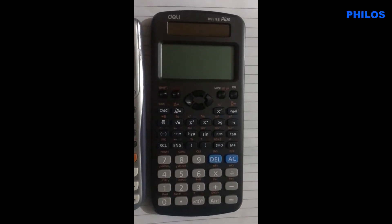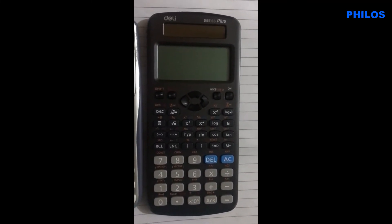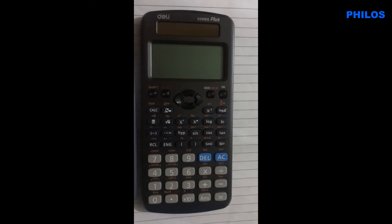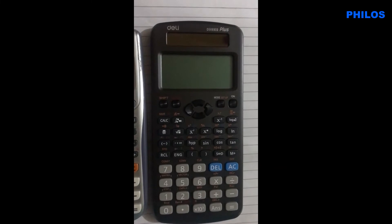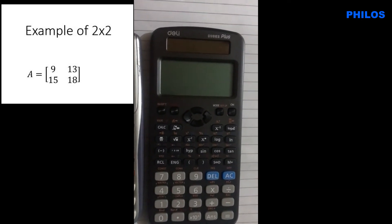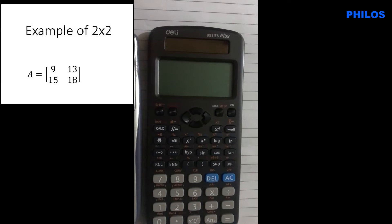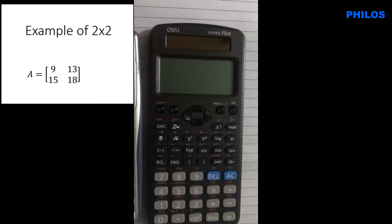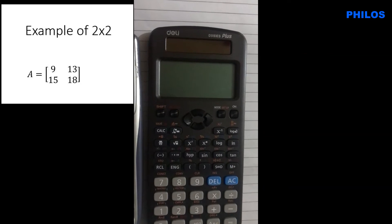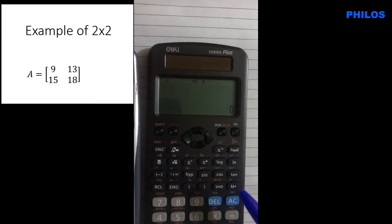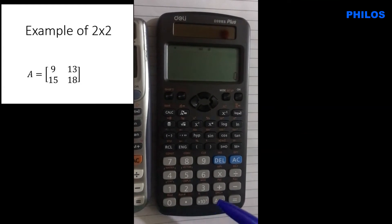Before taking another 3x3 example, let's do a 2x2 matrix. I'm showing you this so that in exams you can compare your calculator result with what you've solved to know if you're on the right path, and for MCQs you can solve quickly. Given matrix A = [9, 13; 15, 18], let's find its determinant, inverse, and adjoint.